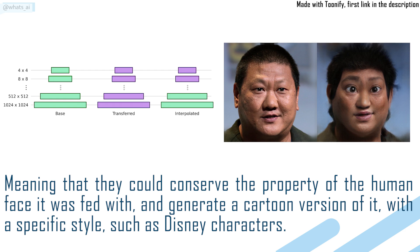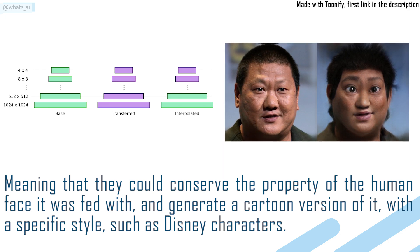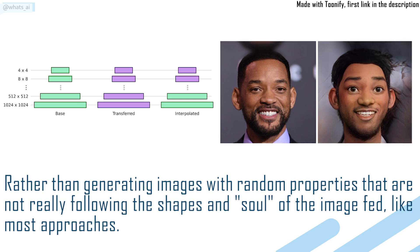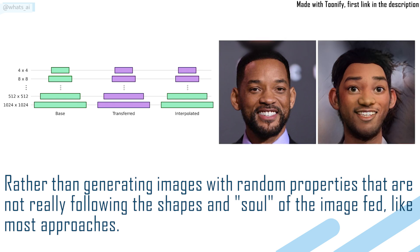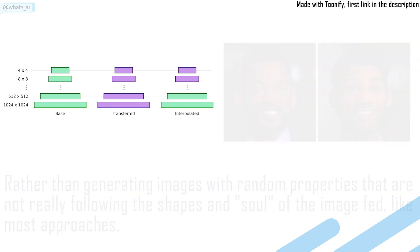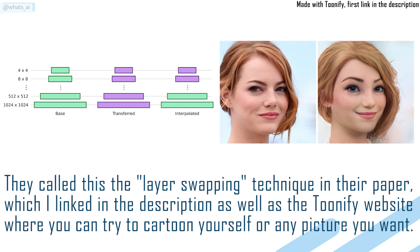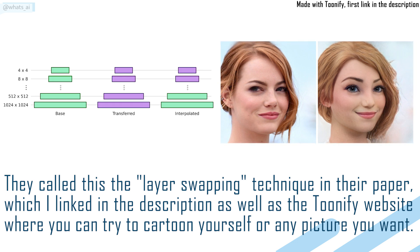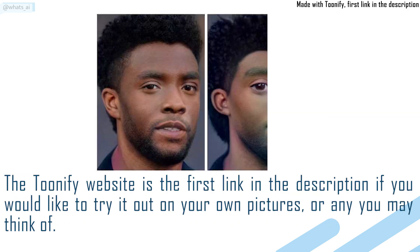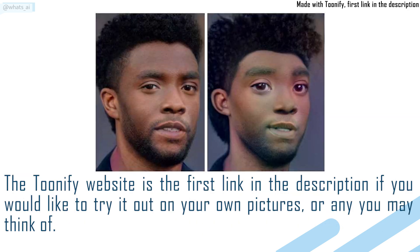This means they could conserve the properties of the human face fed in and generate a cartoon version of it with a specific style — such as Disney characters — rather than generating images with random properties not following the shapes and soul of the input image, like most approaches. They call this the layer swapping technique in their paper, which is linked in the description, along with the Toonify website where you can try to cartoonize yourself or any picture you want.